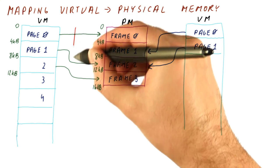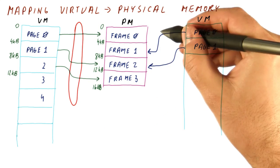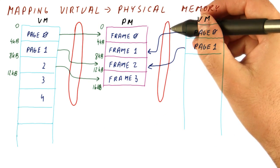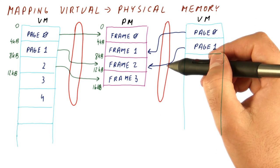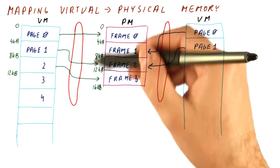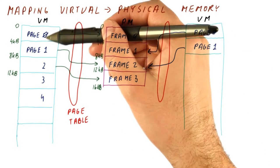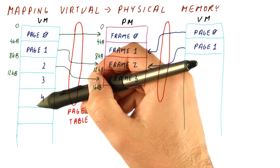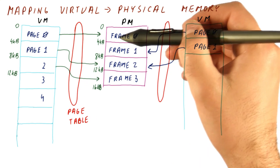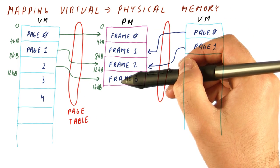So who decides how to do this mapping here and here? And the answer is the operating system decides, and the actual mapping mechanism is called a page table. It's a table that says, for each page in a process, where is that page really mapped in the physical memory?